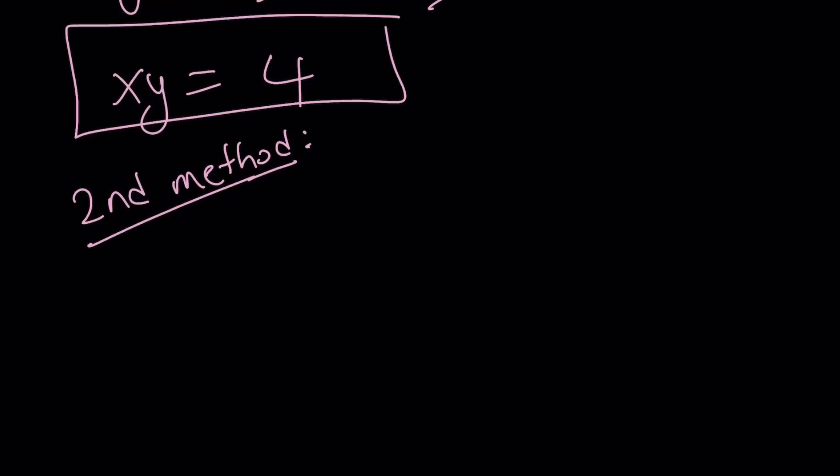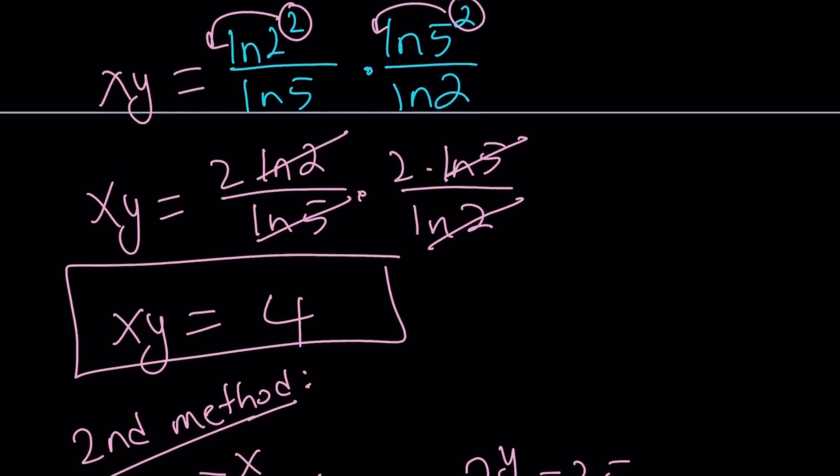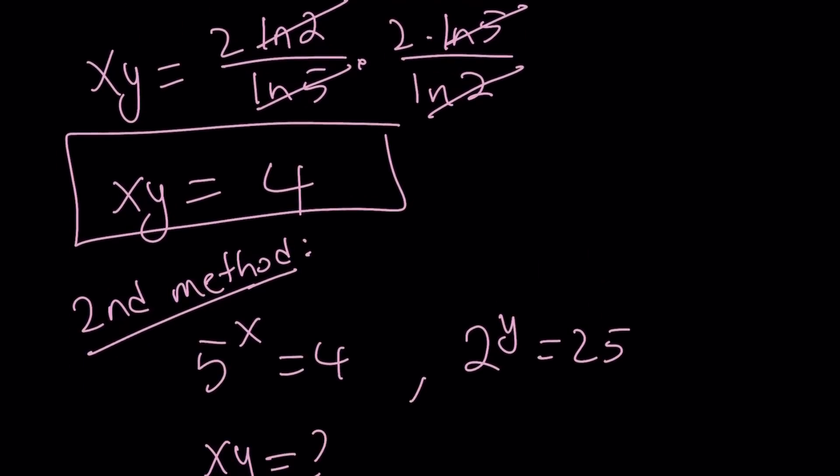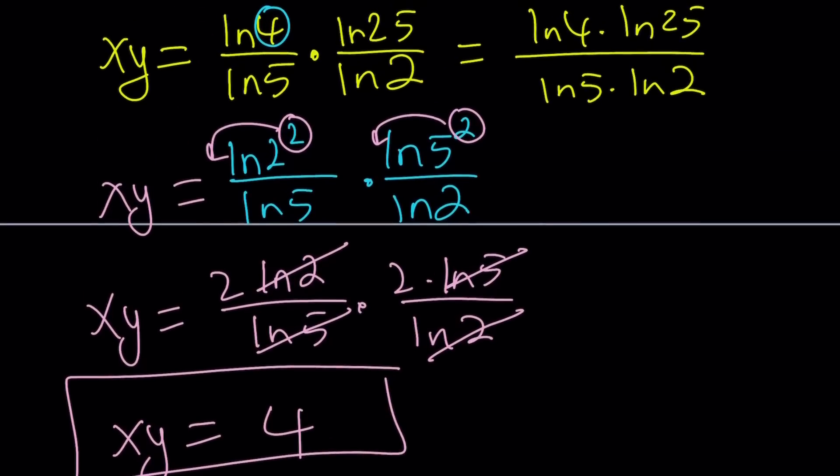So here's how the second method works. Let's rewrite the original problem. 5 to the x equals 4. 2 to the y equals 25. Find what is xy. So notice that we've got logarithmic expressions for x and y. And we multiply them together. Now before we start with the second method, I just want to ask you a quick question. Like pause, maybe keep it open-ended.